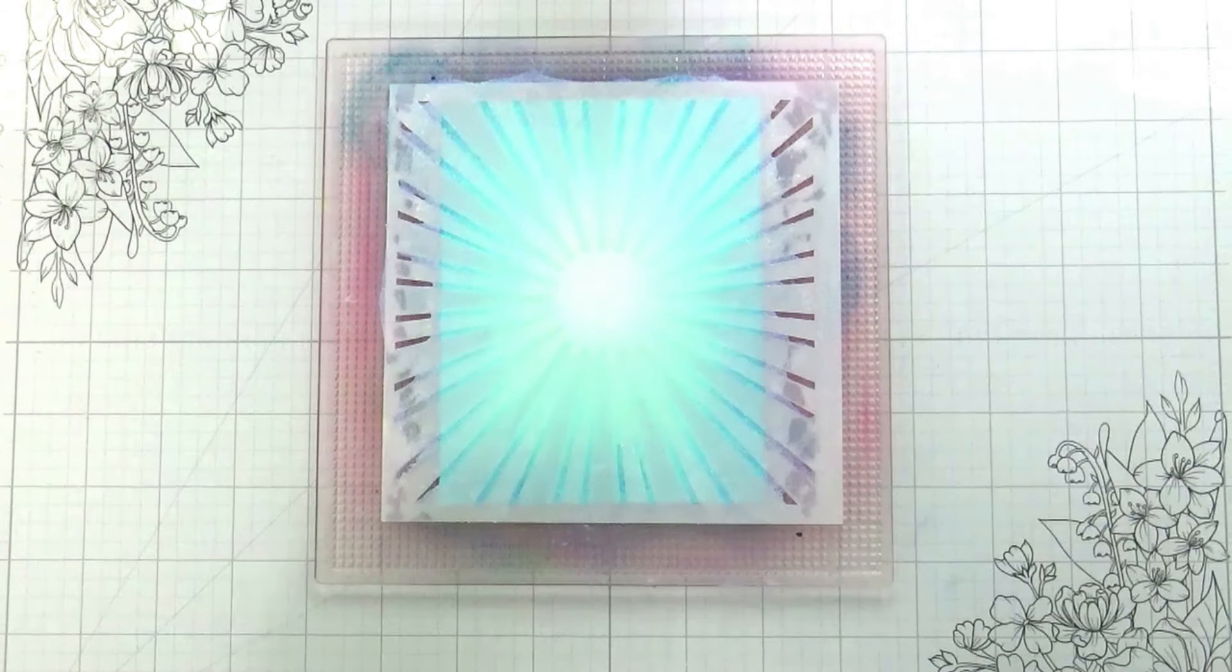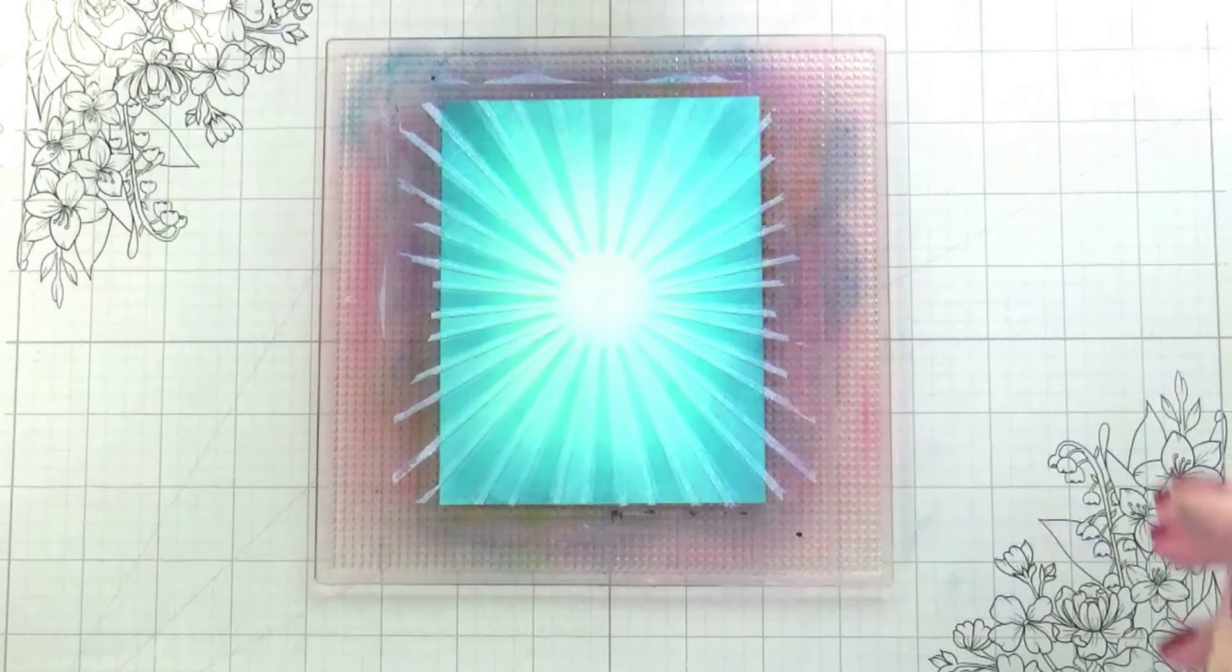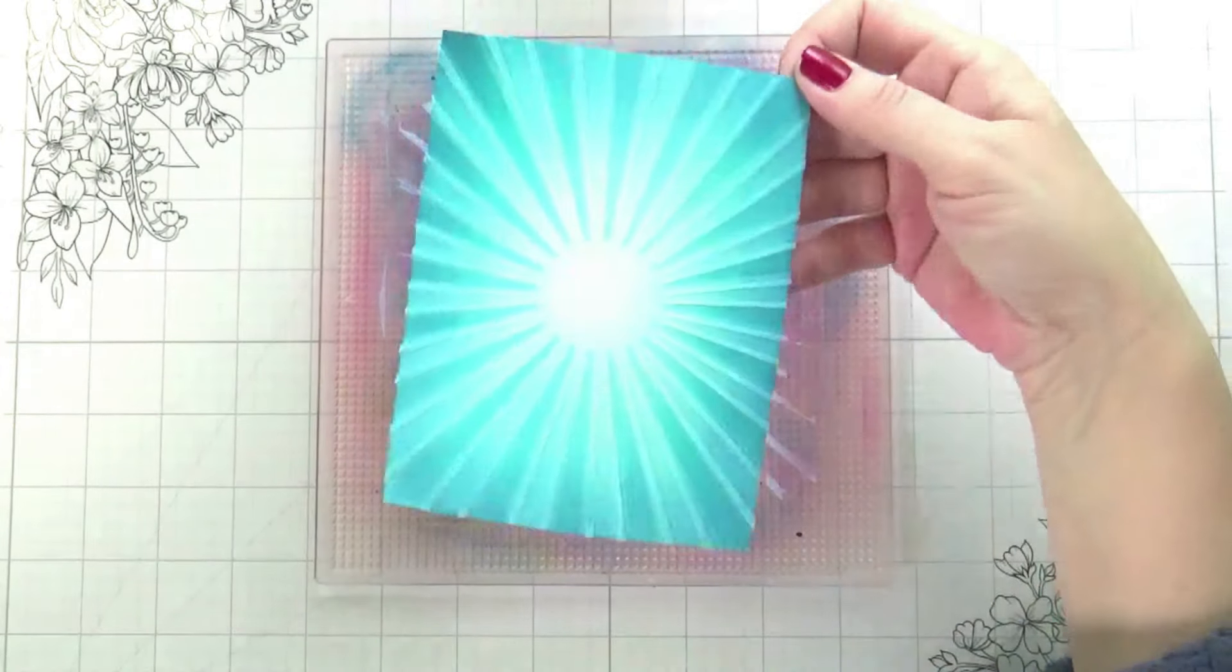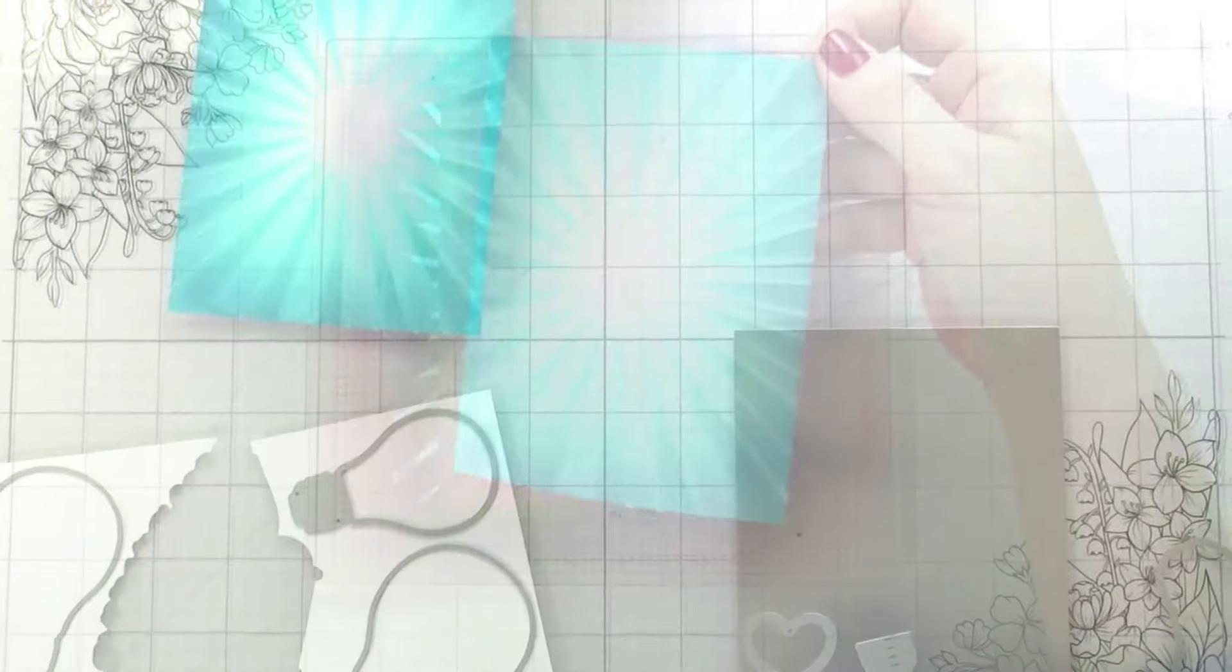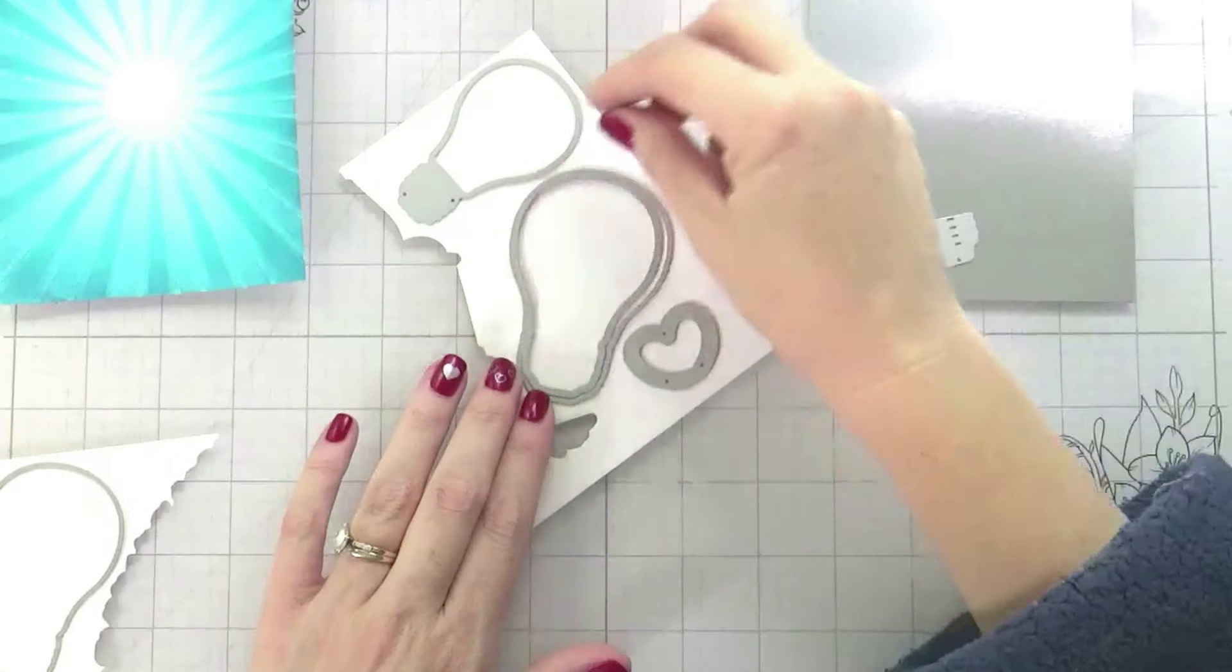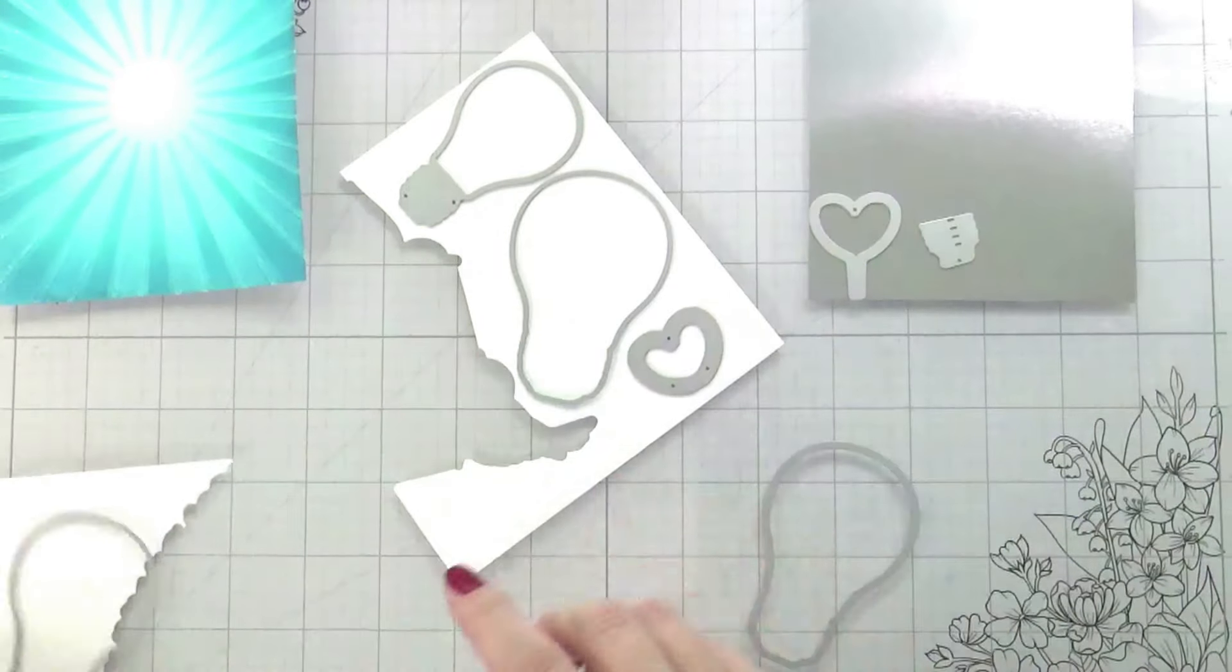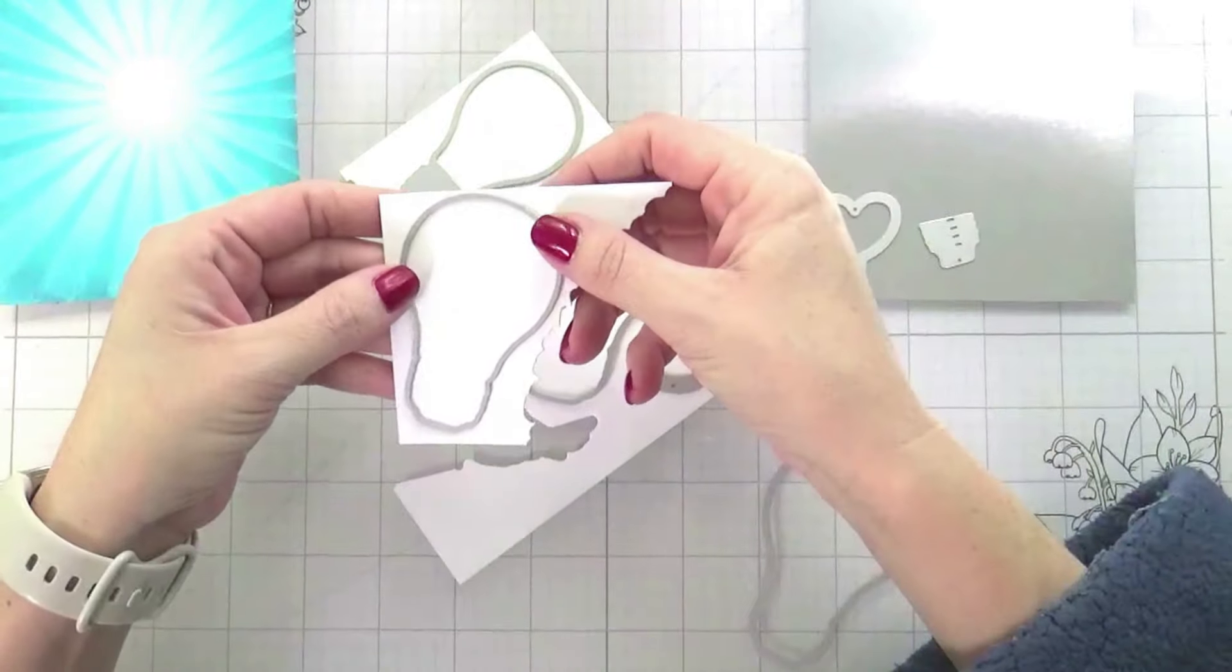This card would work without the shaker element and without the light element as just a general card. So if you're like I love the layout but I'm not interested in doing all that other heavy lifting for the other elements, no fear, you don't have to. So now I'm going to cut out the rest of my elements. I have the little filament inside, I chose the one that looks like a heart but there's a lot of other options.